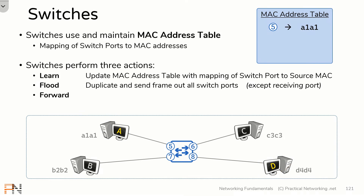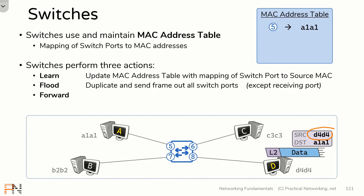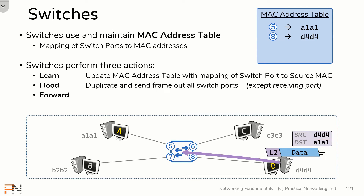Inevitably, host D is going to generate a response to send back to host A. This response is going to have a source MAC address of host D's MAC address D4D4 and a destination MAC address of host A's MAC address A1A1. Host D puts this response on the wire where it arrives on the switch on port 8. This allows the switch to once again perform its learning action, updating the MAC address table indicating that something just arrived on port 8 with a source MAC address of D4D4, creating that mapping.